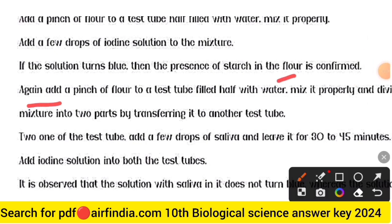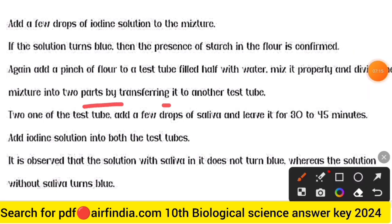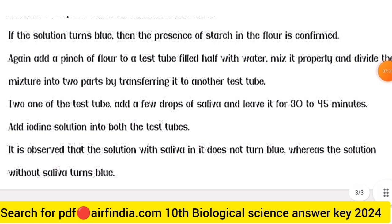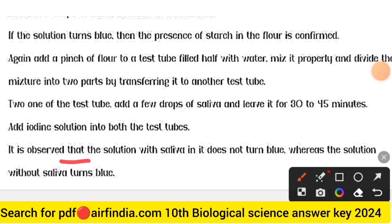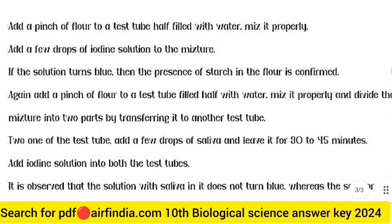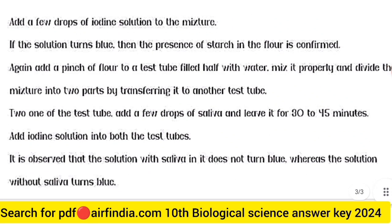Again, add a pinch of flour to a test tube half-filled with water, mix it properly, and divide the mixture into two parts by transferring it to another test tube. To one test tube add a few drops of saliva and leave it for 30 to 45 minutes. Add iodine solution to both test tubes. It is observed that the solution with saliva does not turn blue, whereas the solution without saliva turns blue.